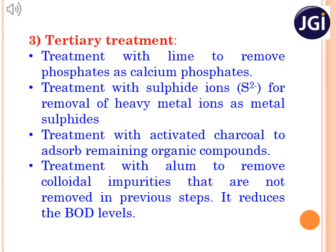The final step is tertiary treatment, which is a chemical treatment — chemical reagents are used to remove the impurities of water. By treating sewage water with lime, phosphates can be removed as calcium phosphates. Treatment with sulfide ions helps to remove heavy metal ions like lead and mercury as lead sulfide and mercury sulfide. Activated charcoal is used to remove other remaining organic compounds through adsorption. Addition of alum removes colloidal impurities by precipitation. Removal of these impurities helps to reduce the BOD level of the sewage water.